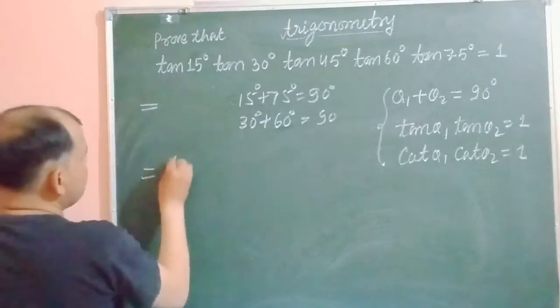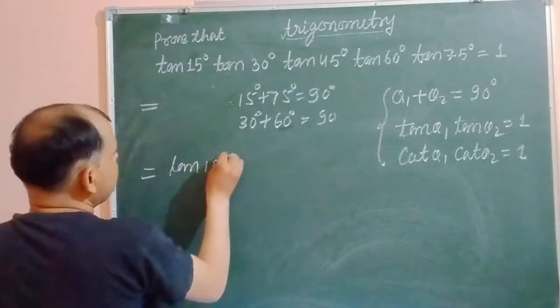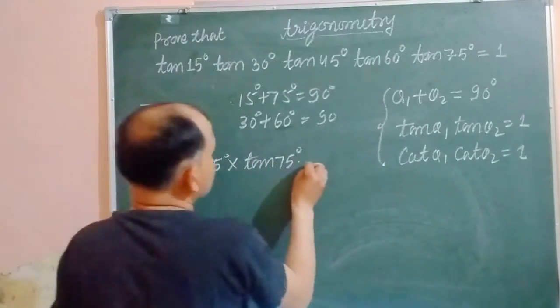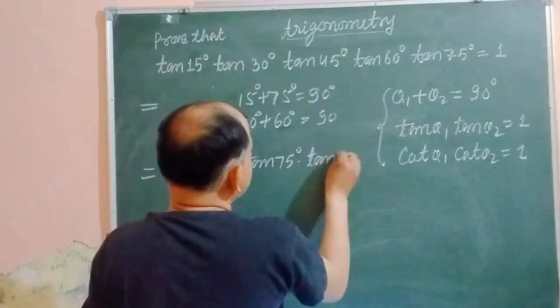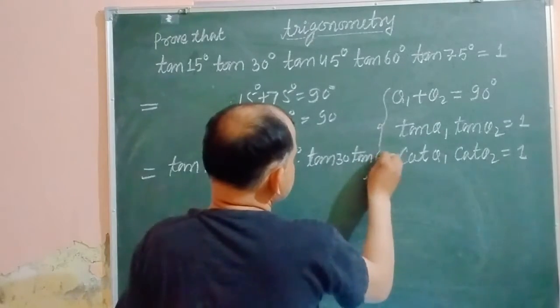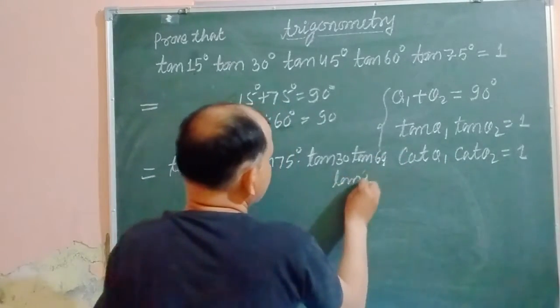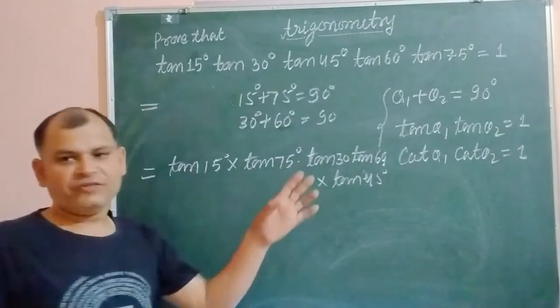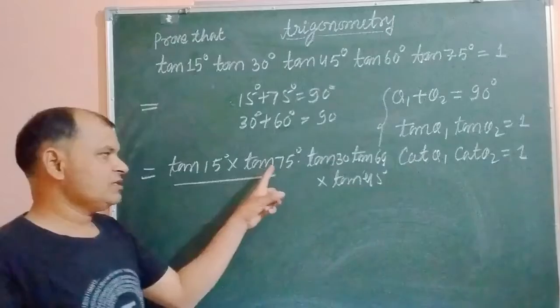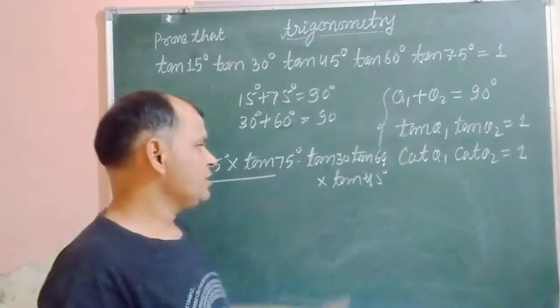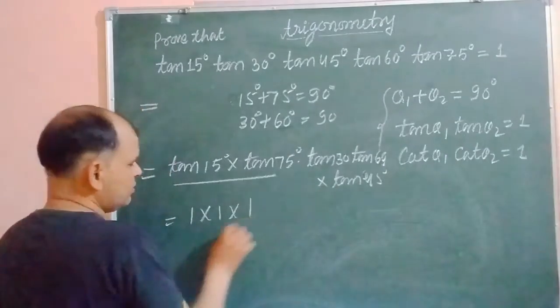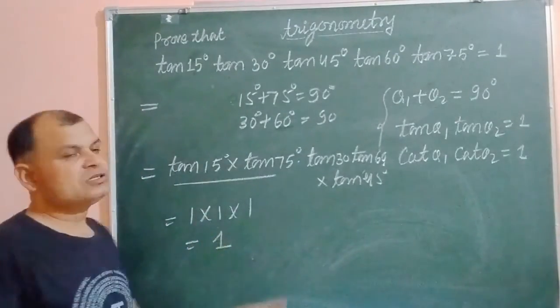So if we have that tan15° into tan75°, into tan30° into tan60°, into tan45°. And you know the value of tan45° which is 1. And this tan45° is 1, and therefore answer is 1.